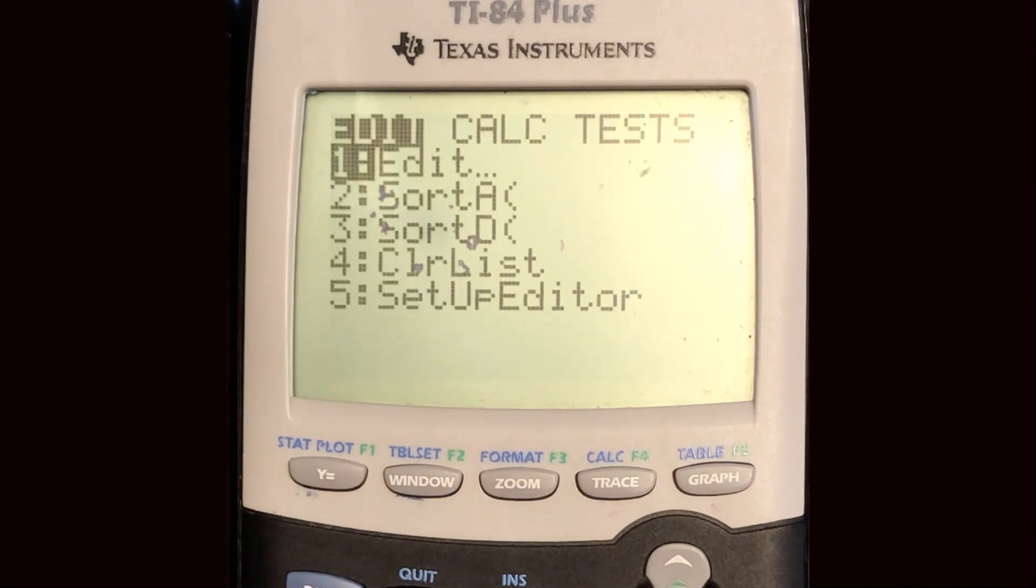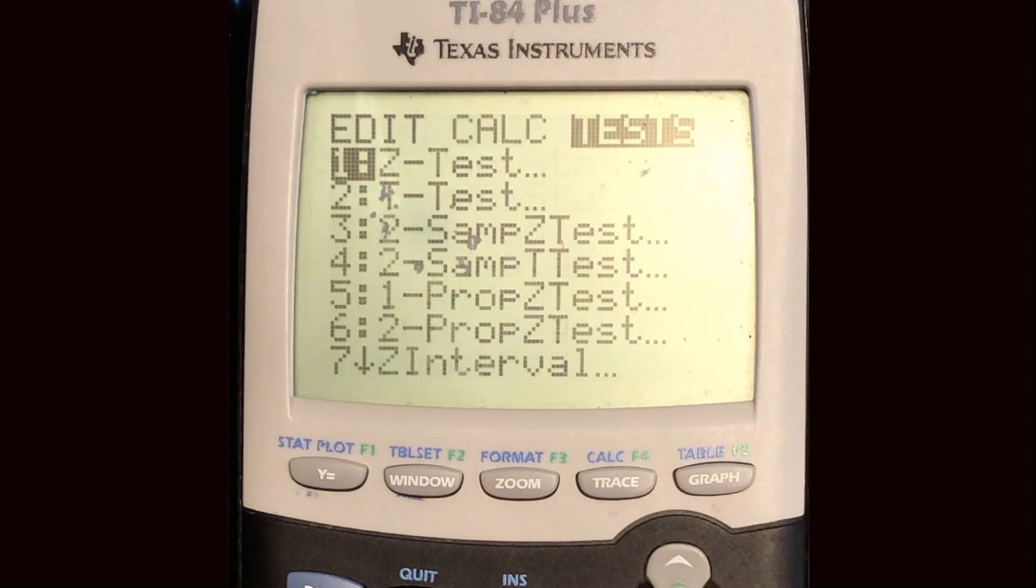Now that I have it entered in I can go back to the main screen, I can press stats, and then scroll over to tests, and then scroll down to z interval. So it's going to calculate a confidence interval. Now it says z because we're going to be using a normal table to calculate the critical value.